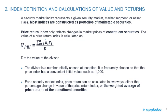A Price Return Index only reflects changes in market prices of constituent securities. The value of a Price Return Index is calculated using the formula where the numerator is the sum of N_i — the number of units of constituent securities held — times P_i, the unit price of each constituent security, divided by D, the divisor. The divisor is a number initially chosen at inception, frequently chosen so that the Price Index has a convenient initial value such as 1,000.